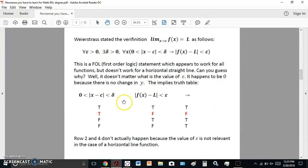And then we look at the truth table here, the implies truth table with these two inputs. And we see that it's only ever false in the second line. But row two and four don't actually happen because the value of epsilon is not even relevant in the case of a horizontal line function.